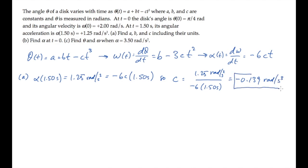Now we can use the expression for omega to find the value of b. At time zero, omega is two radians per second, and that equals b minus three times c times the time, which is zero seconds squared. So we see right away that the value of b is two radians per second.